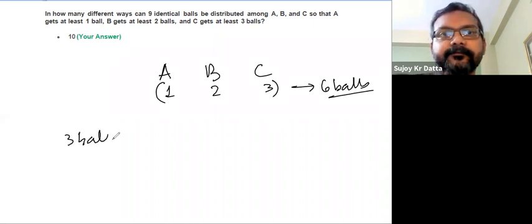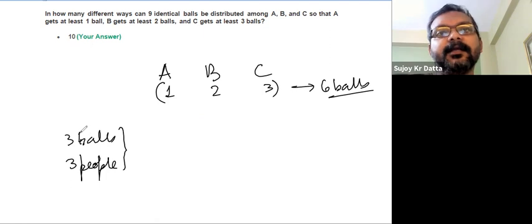You have to distribute these three balls among three people and anyone can get any number. So you might decide to put zero, zero, three also. There are no other conditions to be satisfied.